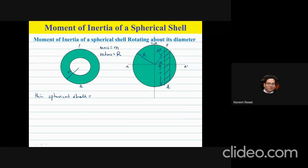Now, what is the surface area this ring covers? Since the shell is hollow, we cannot integrate the volume — there is no material inside the spherical shell. So we have to consider the surface area. We're creating slices, adding them all up to get the entire spherical shell.